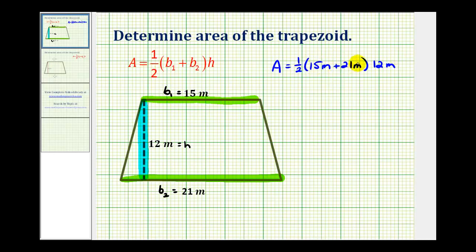Let's simplify this quantity. We'll have one-half times the quantity 15 meters plus 21 meters, which is 36 meters. We'll write this in fraction form: 36 meters over 1 times 12 meters over 1.